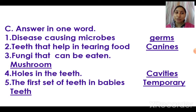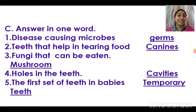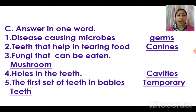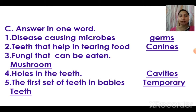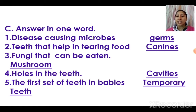Answer in one word: disease-causing microbes are called germs. Teeth that help in tearing food are called canines — they are the sharpest and are located just adjacent to the incisors. We have one canine on each side, so two canines in each jaw and four total.